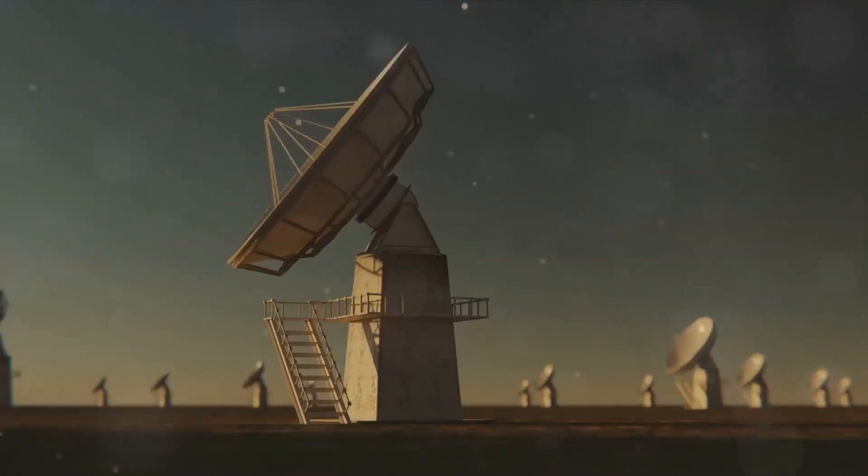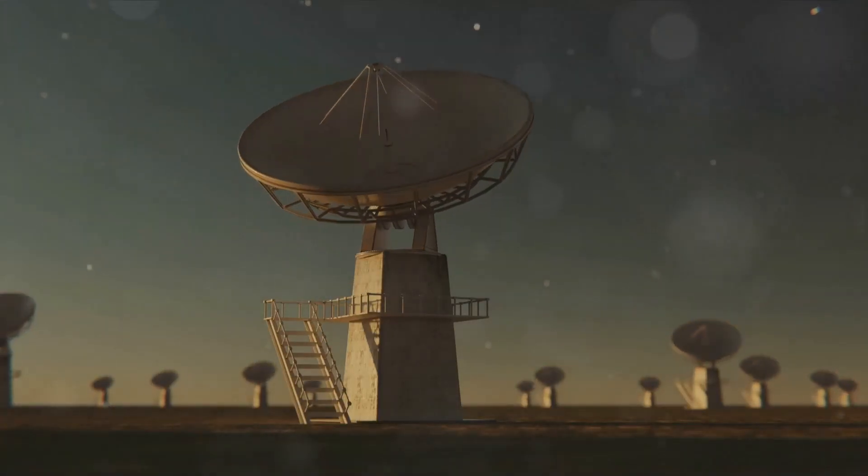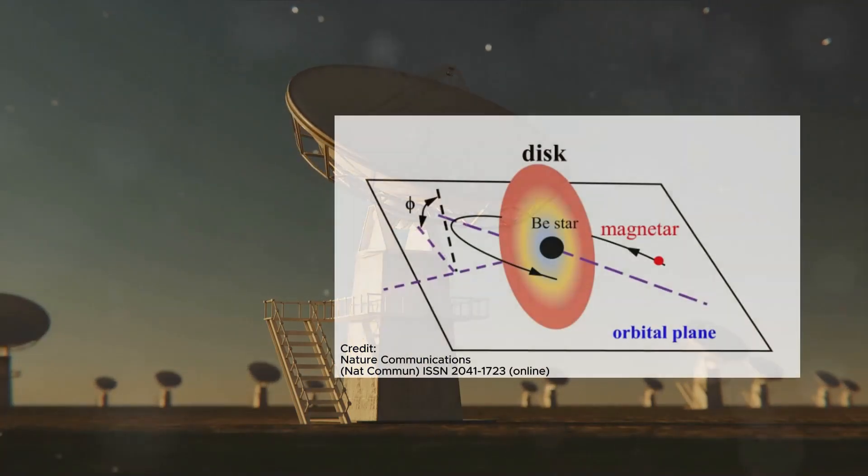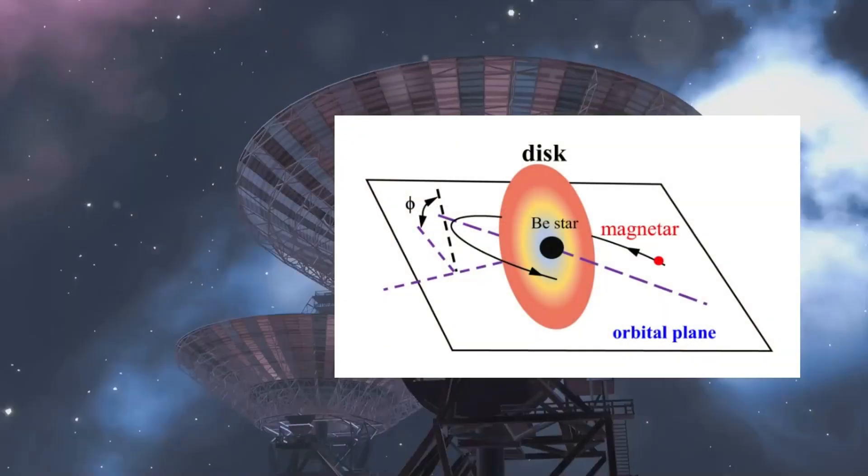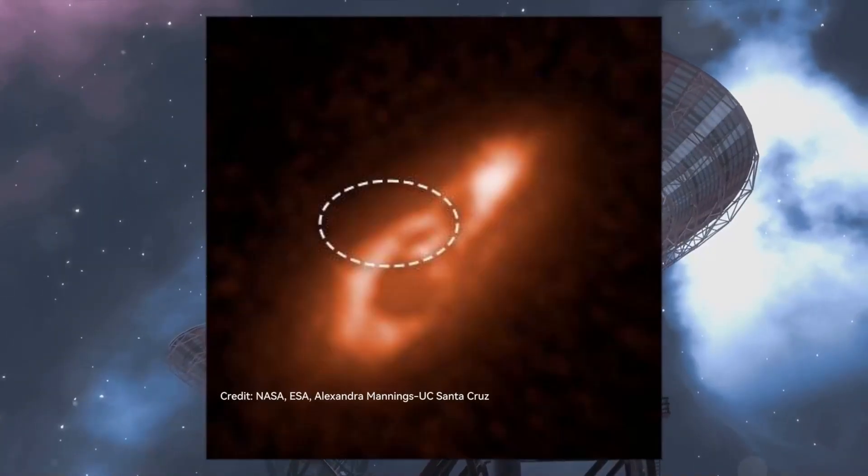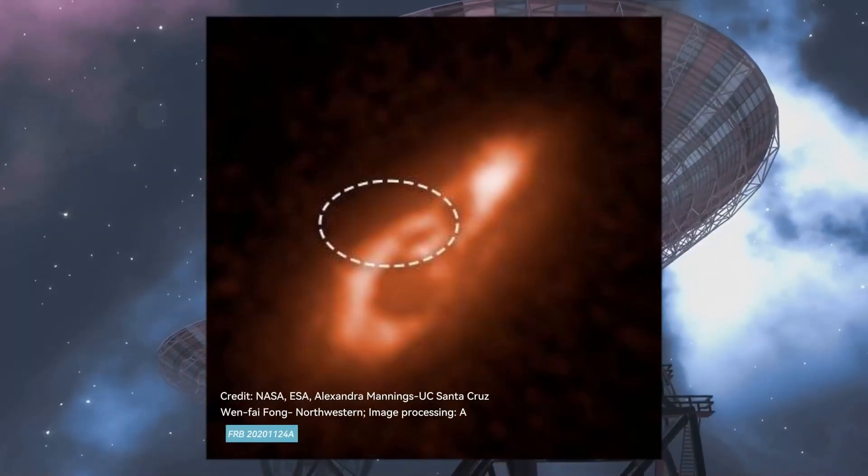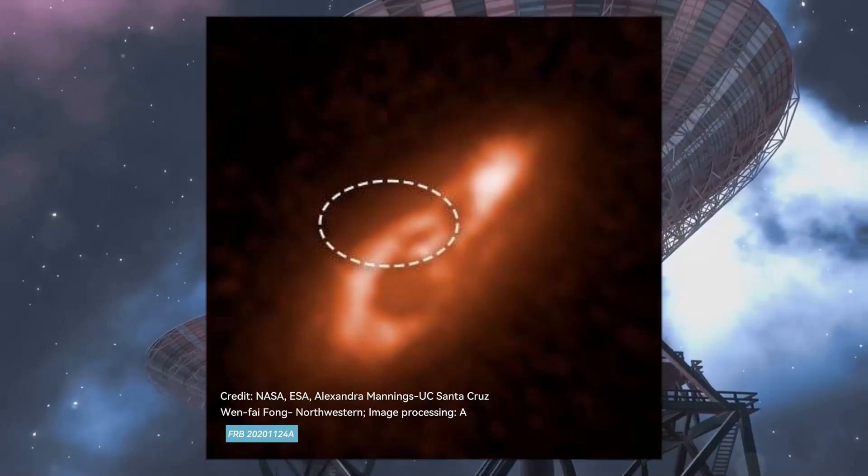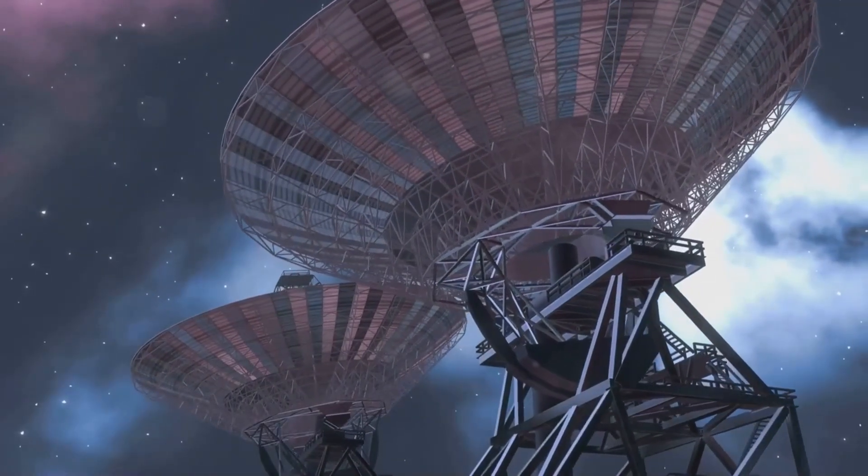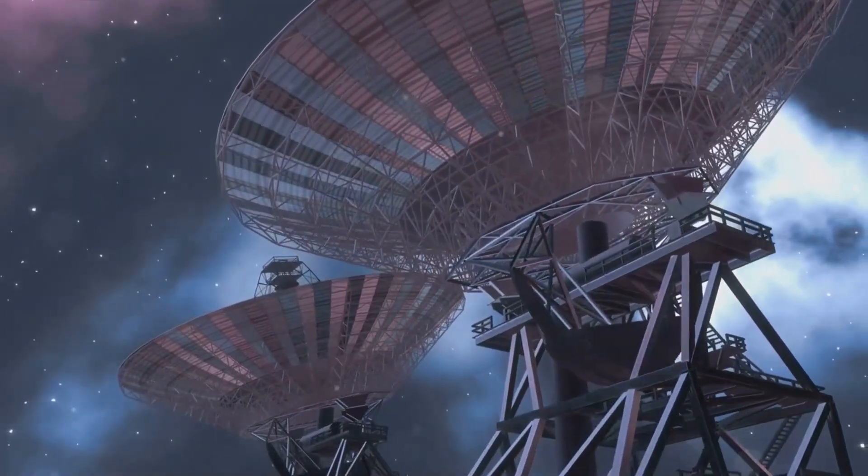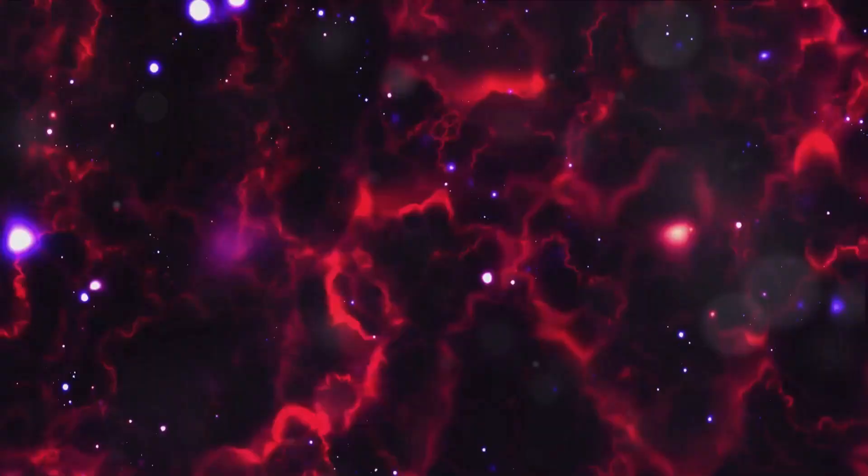This study proposed that FRB20201124A originated from a binary system containing a magnetar and a be star. The burst source was found to be located in a barred spiral galaxy away from significant star formation. This fascinating discovery only deepens the mystery surrounding the origins of these powerful emissions of radio waves.